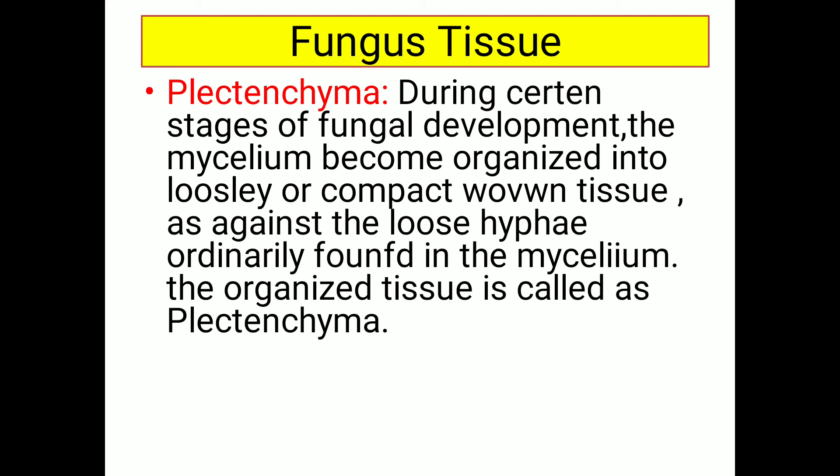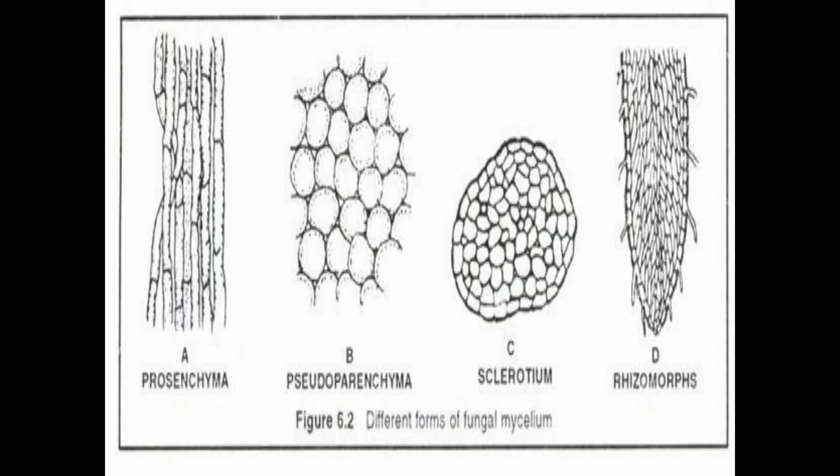Next one is fungal tissue. Fungal tissue is modified into plectenchyma. During certain stages of fungal development, the mycelium becomes organized into loosely or compactly woven tissue, as against the loose hyphae ordinarily found in the mycelium. This organized tissue of mycelium is called plectenchyma. During the growth of the fungus, some hyphae aggregate or clump into a compact woven mass of tissue — that structure is called plectenchyma.